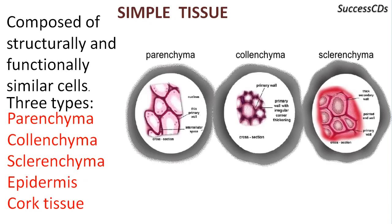Simple tissues are composed of structurally and functionally similar cells. It is of four types. Parenchyma has cells which are live and they are oval, elongated, and loosely packed with large intracellular spaces. These tissues are found throughout the plant body. Collenchyma cells are also live; they are oval, elongated, and tightly packed with no intracellular spaces, and it provides mechanical support.